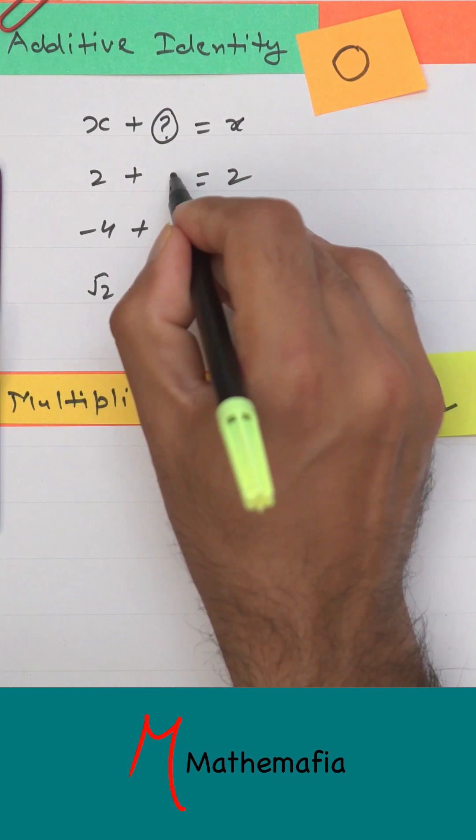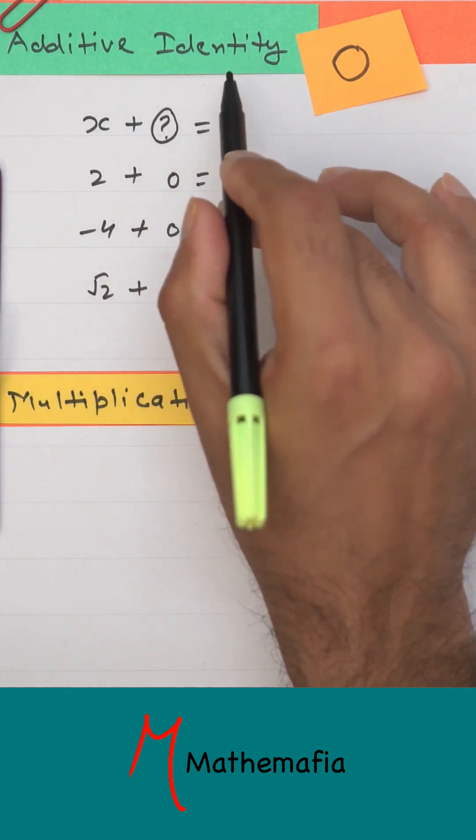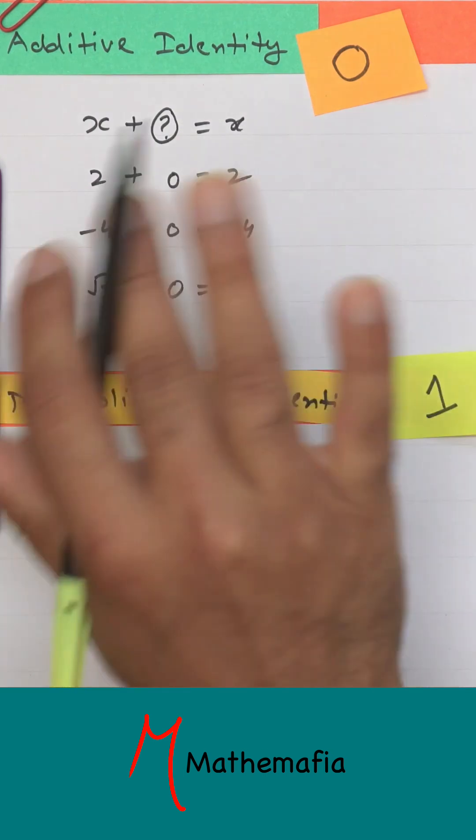There is only one such number: 0. So, the number 0 is known as the additive identity of all numbers. If we add 0 to any number, we get the same number as a result.